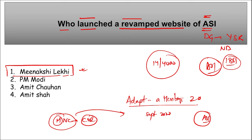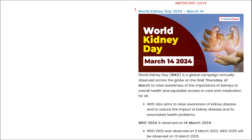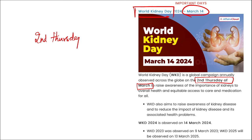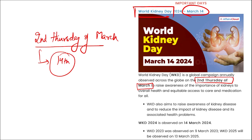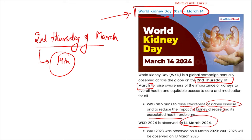World Kidney Day is observed on the second Thursday of March every year — in 2024 it fell on 14th March. It aims to raise awareness of kidney disease and reduce its associated health impacts. The branch of medicine dealing with kidneys is nephrology.